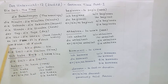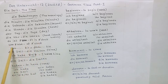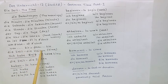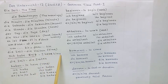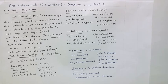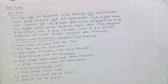Dear viewers, please note this: von ... bis — from ... till. Die Zeit, die Zeiten — the time, the times. Ich habe Zeit — I have time.